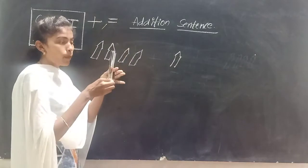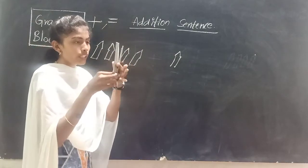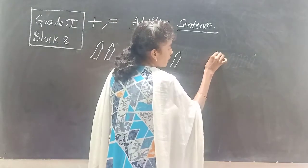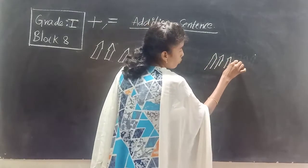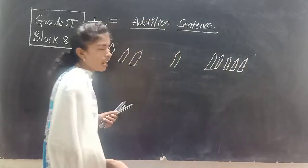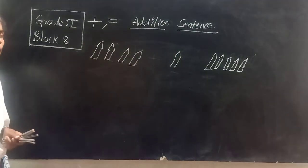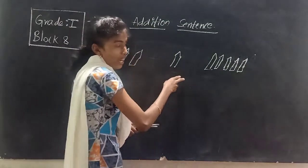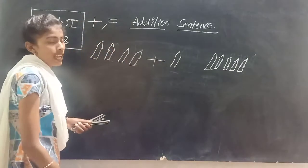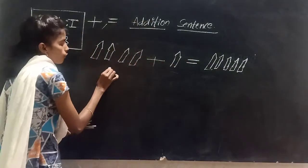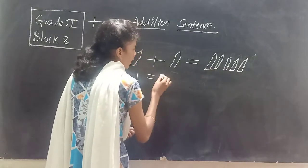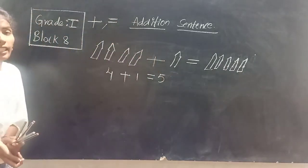So if I add them, how many pencils do I have now? One, two, three, four and five — five pencils in all. Which numbers did I add? Four and one. So I put plus in between. Four plus one is equal to five. So like this we represent the numbers.